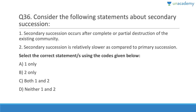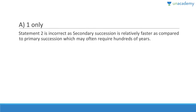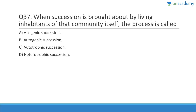Question 36: Secondary succession occurs after complete or partial destruction of the existing community — correct. It is relatively slower compared to primary succession — wrong. Answer is A, option 1 only. Secondary succession is faster than primary succession because primary succession may need hundreds of years, but secondary succession can happen in a few years or even some decades.